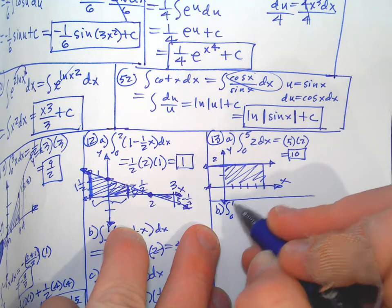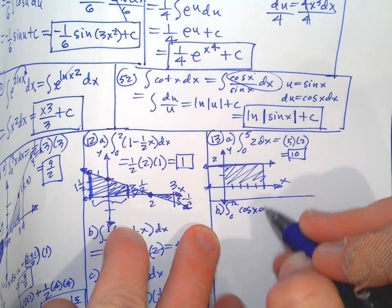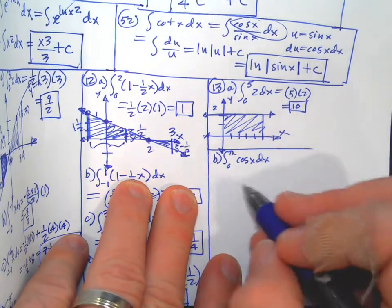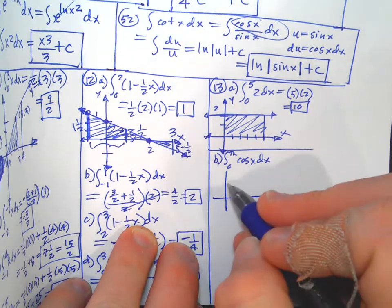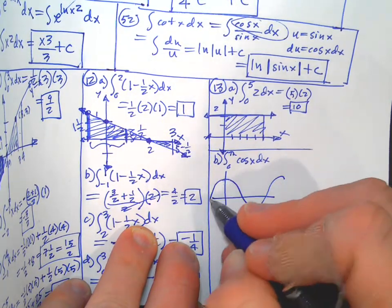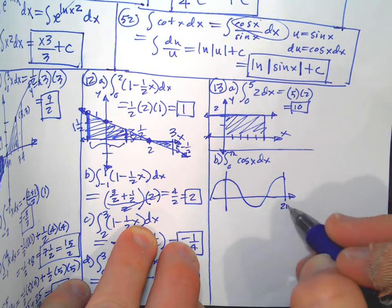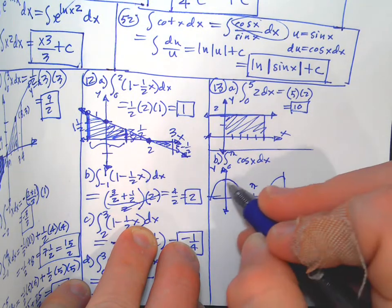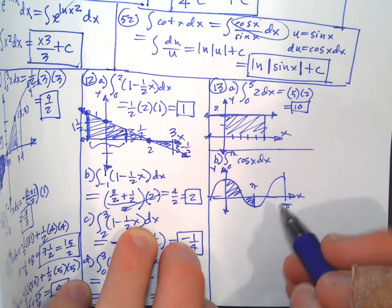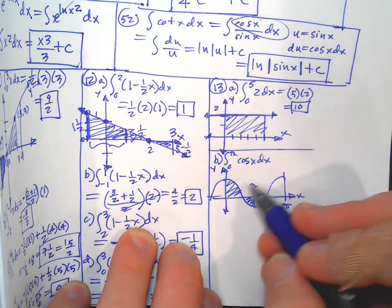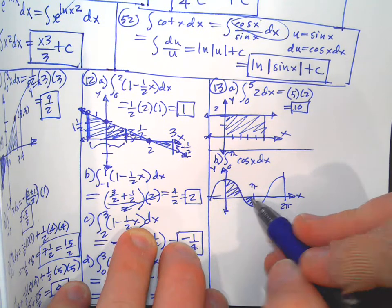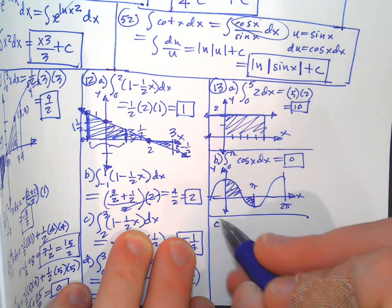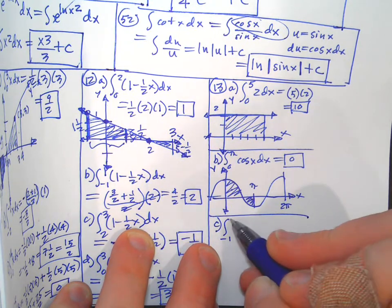Part b: integrate from 0 to π of cos(x) dx. Graph the cosine curve — from 0 to π/2 the area is positive, and from π/2 to π the area is equal and negative. They cancel, so the answer is zero — similar to those triangles we did before.